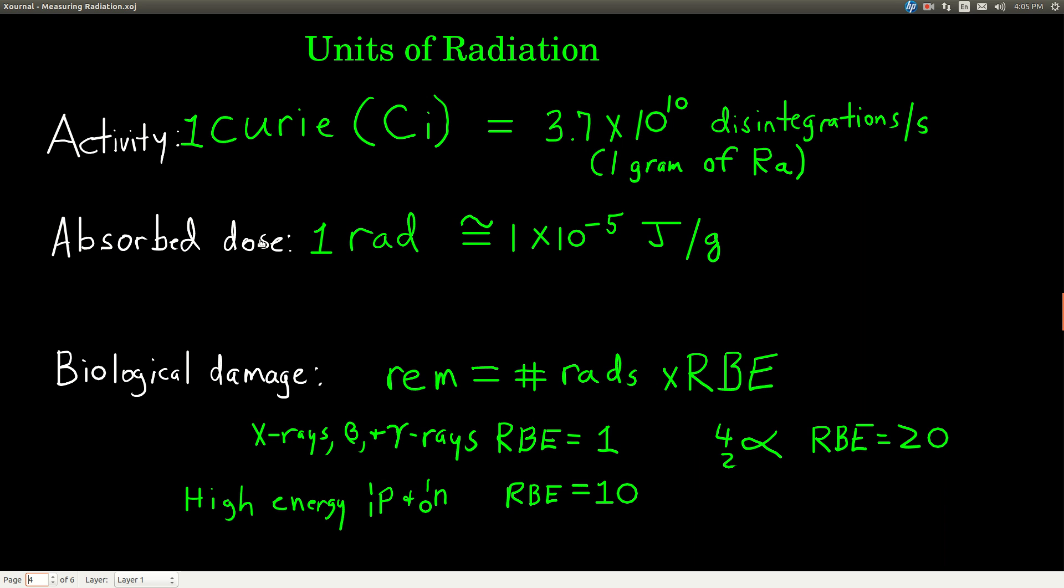Now absorbed dose, radiation absorbed dose, the rad. This measures how much energy is hitting whatever is being irradiated per gram of the irradiated material. So it's joules, which is energy per gram. And this gram is not grams of the isotope, but rather grams of whatever the radiation is hitting. Your body or maybe a detector or something like that. And that's about one times 10 to the minus 5th joules per gram.